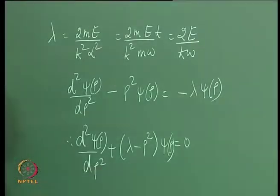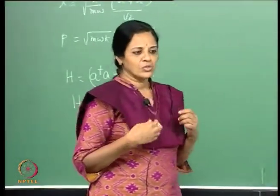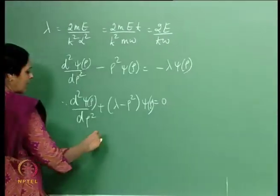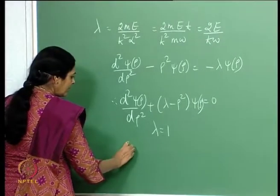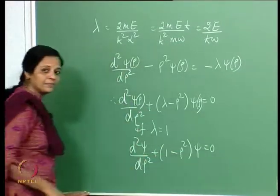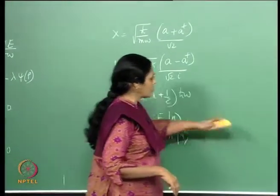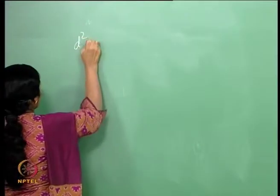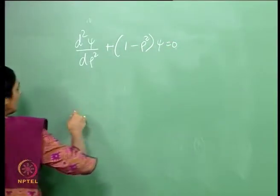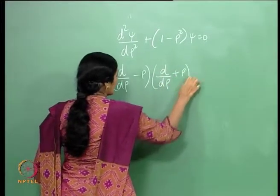When solving this equation, we first look for solutions at specific values of λ to get a handle on the general solution. For λ = 1, the equation d²ψ/dρ² + (1 - ρ²)ψ = 0 can be factored as (d/dρ - ρ)(d/dρ + ρ)ψ = 0.